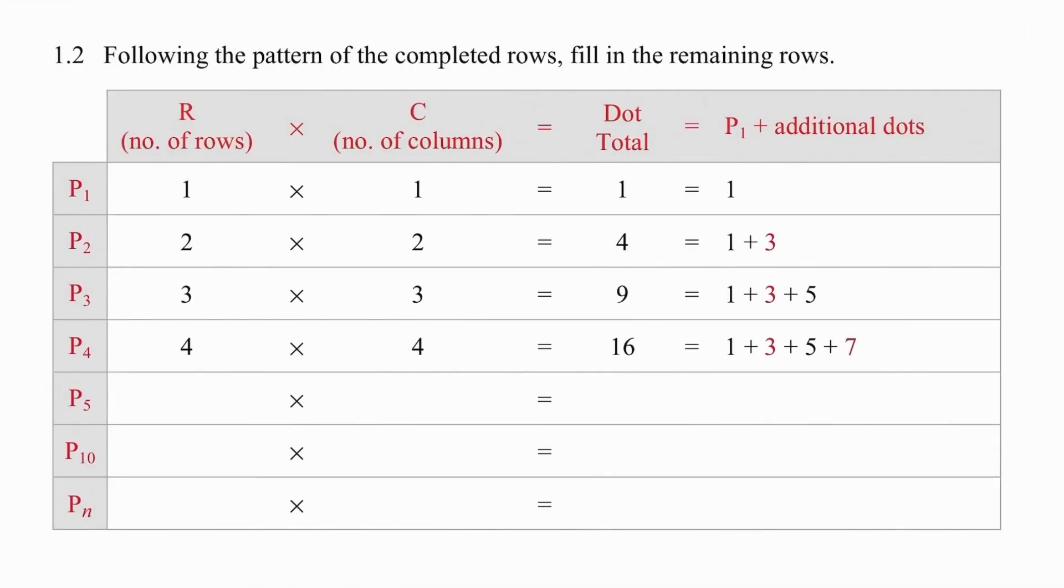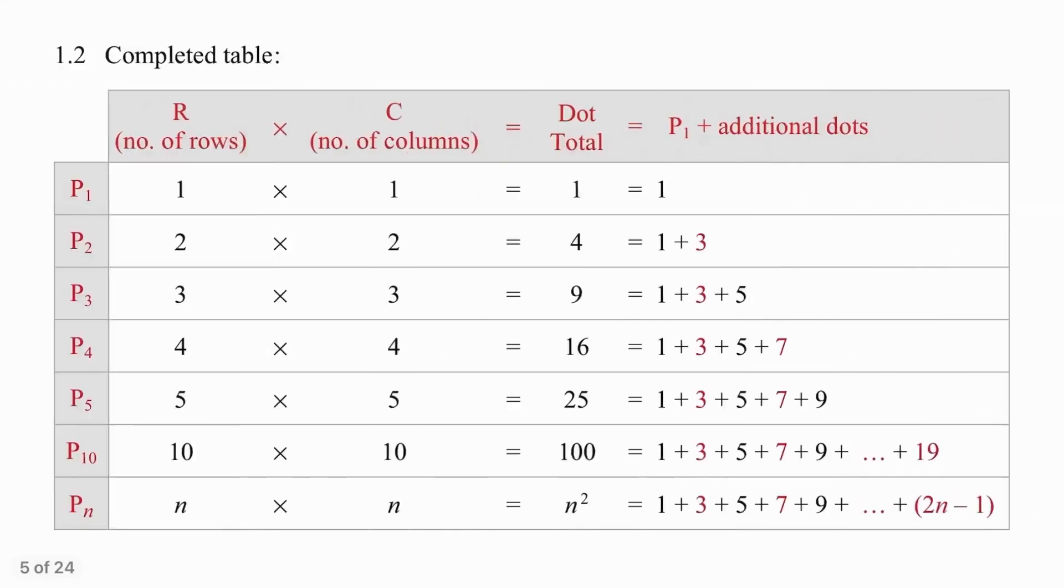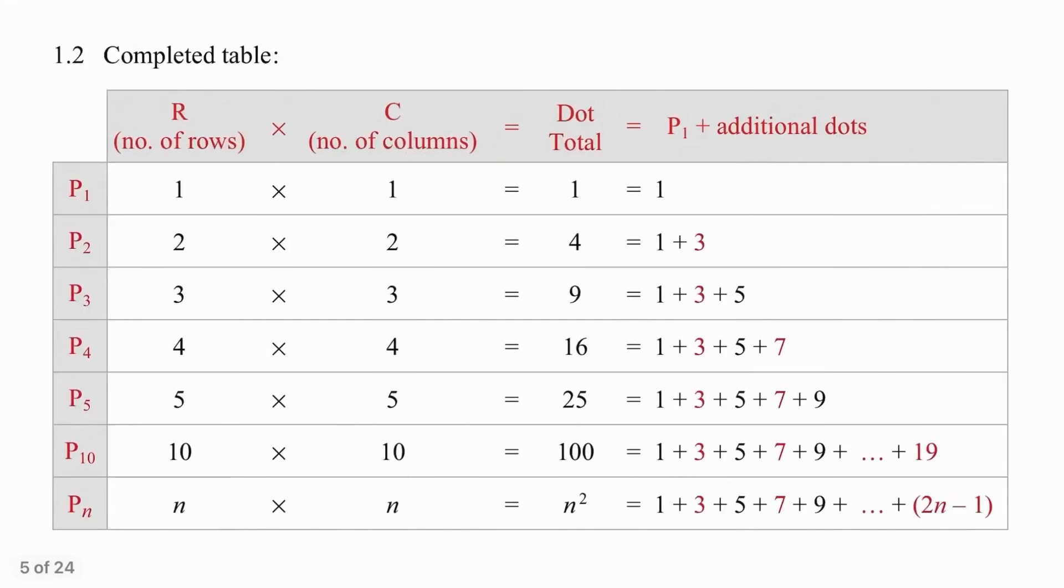Pause the video here. Think carefully about what you're doing and then we'll go through it together. Pattern five is still relatively straightforward. Five by five gives 25.